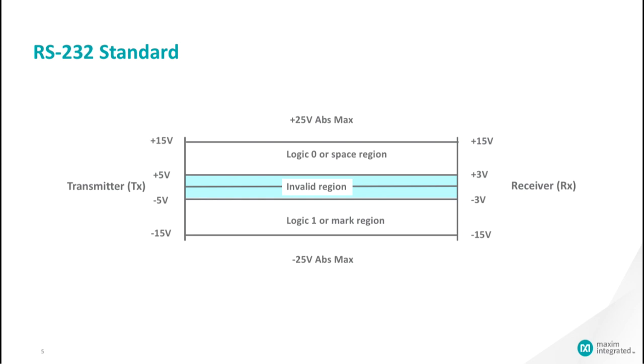The standard defines a logic 1, also known as MARK, with a voltage between minus 3 volts and minus 15 volts, and a logic 0, also known as a space, with a voltage between plus 3 volts and plus 15 volts for the receiver side. For the transmitter side, the output needs to be plus or minus 5 volts to plus or minus 15 volts. Voltages between plus and minus 3 volts are invalid, providing a noise margin of plus or minus 2 volts.